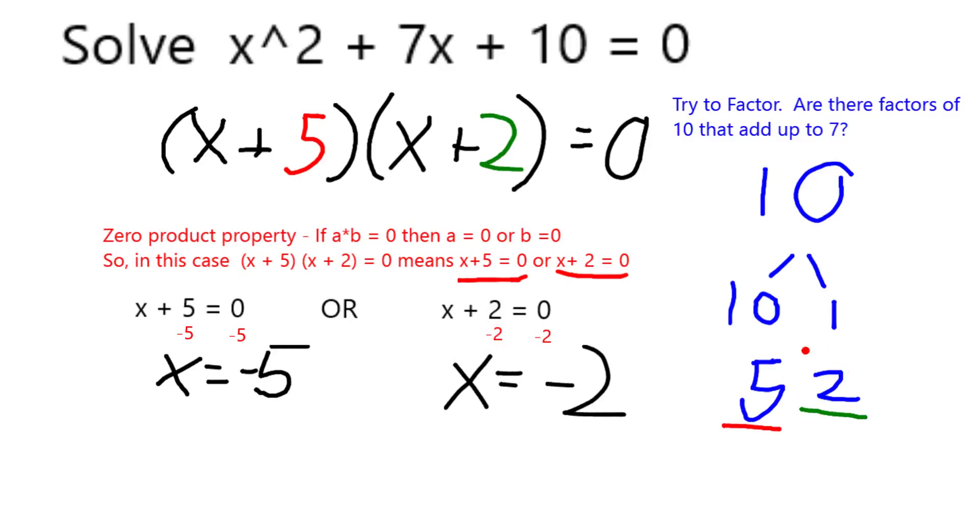So we're going to factor, find factors of the constant term which add up to the coefficient of the middle term. We write it out in factored form and apply the zero-products property. Thank you.